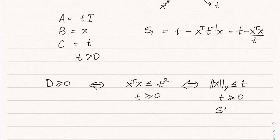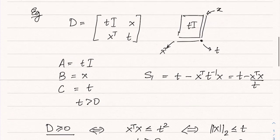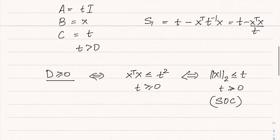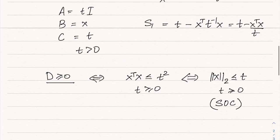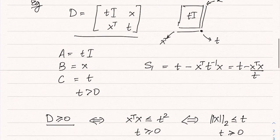So this is of what form? This is the second order cone form. So we have expressed this constraint, which was on the positive semi-definiteness of this matrix D, as a second-order cone constraint.